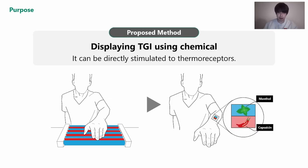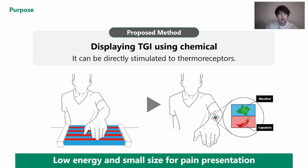Previous methods are based on gear and consume a lot of energy. In contrast, we propose a method of presenting TGI using chemicals such as capsaicin and menthol. This enables a compact and low-energy-consuming TGI implementation.